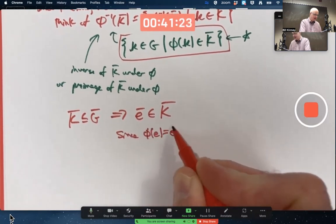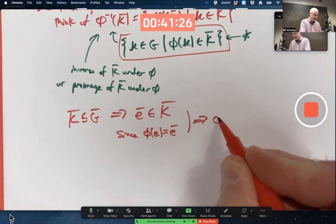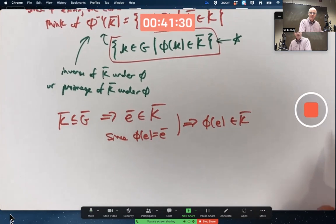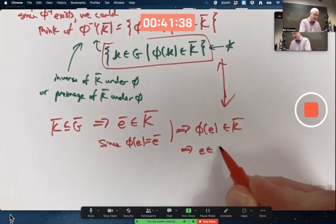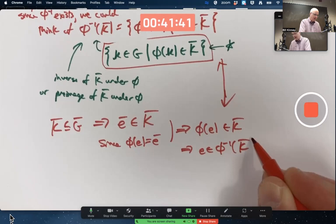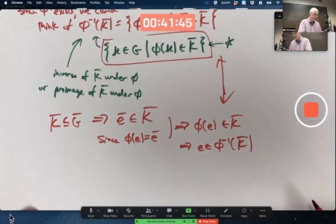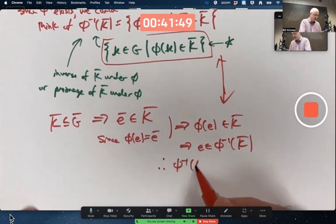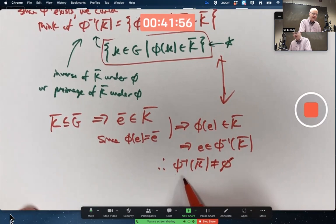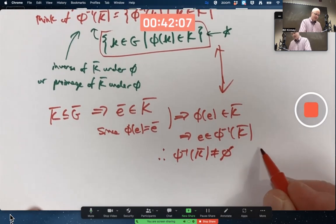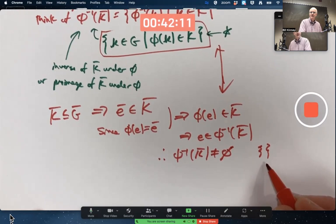Since φ of E is E bar, this implies φ of E is an element of K bar which by this definition here means that E is an element of the preimage of K bar because it's an element of G that gets mapped to K bar. Therefore the preimage is not empty. It's unfortunate that the empty set notation looks like a φ. I try to make my empty set especially when there's φs around have a line through it that's a bit more slanted. Other books use that notation for empty set. Either way is okay.